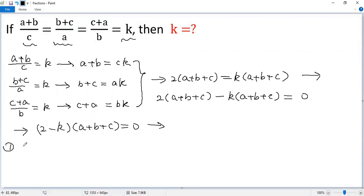The first case, 2 minus k equals 0. The second case, a plus b plus c equals 0. For the first case, we get the first solution k equals 2.